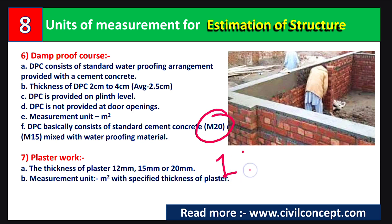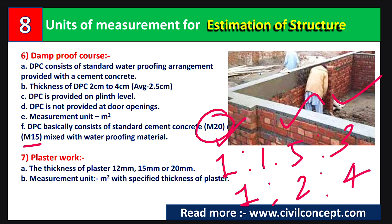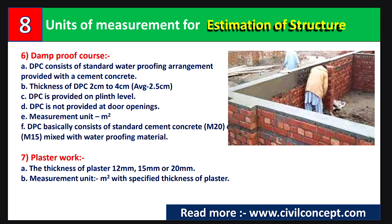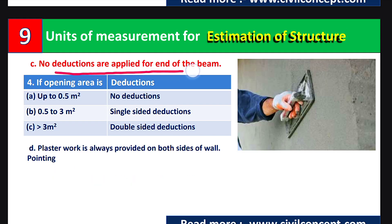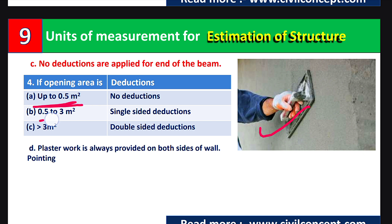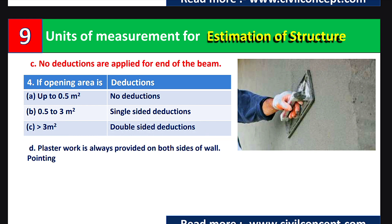DPC consists of standard cement concrete: M20 grade (1:1.5:3) or M15 grade (1:2:4), mixed with waterproofing materials. The seventh topic is plaster work. Plaster thickness is typically 12 mm, 15 mm, or 20 mm, and the unit is square meters. No deduction is applied for beam ends. For openings up to 0.5 m², no deduction; for 0.5 to 3 m², single-sided deduction; for greater than 3 m², double-sided deduction.